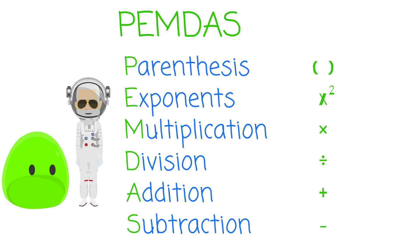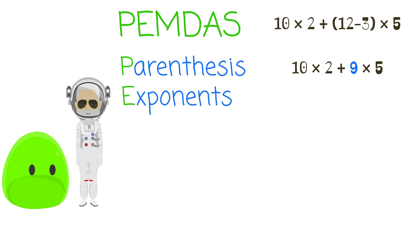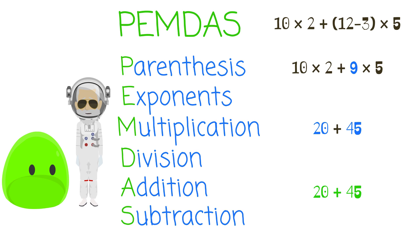PEMDAS represents the order in which the problem should be solved. Anything in parentheses should be solved first. Then any exponents. Since this problem doesn't have exponents, just skip that part. Next, solve the multiplication or division, whichever comes first working from left to right. And finish it up with addition or subtraction. Again, solve these as they come from left to right.